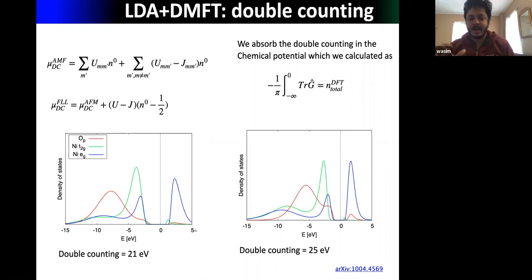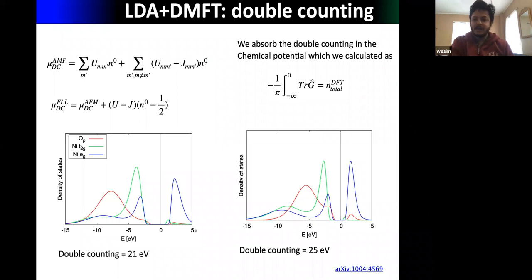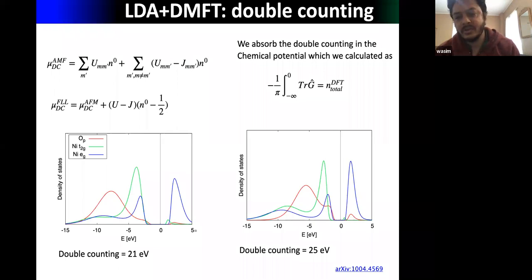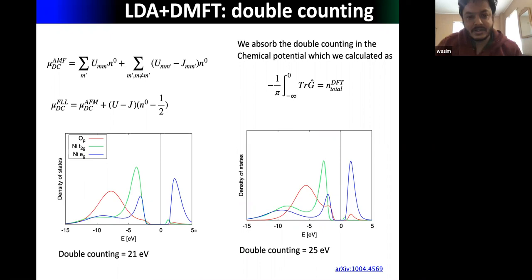For NiO, calculations with various double counting values show that depending on the double counting, the width of the gap around the Fermi level differs, and even the position of the Hubbard bands differs. So double counting can be sensitive for spectral functions. In our LDA+DMFT scheme we absorbed it into the chemical potential through controlled adjustment in the MOIPT solver.